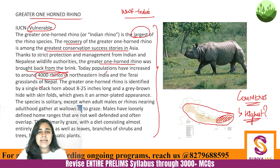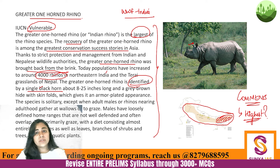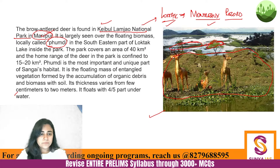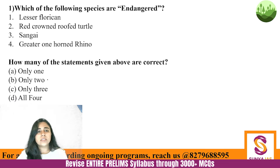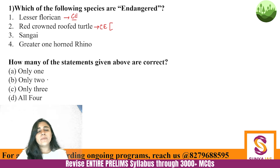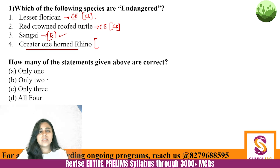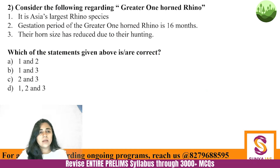Greater One-Horned Rhino was brought back from the brink — today we have about 4,000 rhinos. It is identified by a single black horn, which is also heavily traded and that is one of the threats to it. It is vulnerable but listed in Schedule One of the Wildlife Protection Act — most highly protected. Coming back to question one: Lesser Florican is critically endangered, Red Crowned Roofed Turtle is critically endangered (CR), Sangai is endangered — only that one is correct — and Greater One-Horned Rhino is vulnerable. So only one out of the four is endangered.